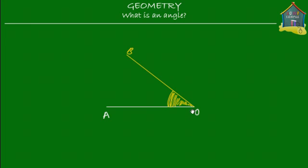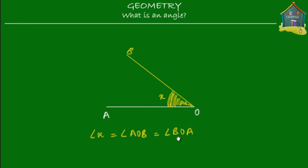Let's give this angle a name — let's say X. So this is angle X, and it can also be written as AOB, or it can also be written as angle BOA. The trick is that O should be in the middle, because O is the meeting point of the two lines. So you can write it as angle X — this symbol here is the symbol for angle — or as angle AOB or BOA.